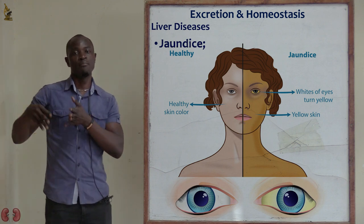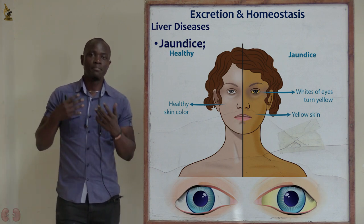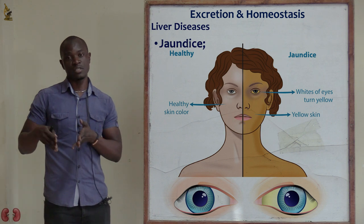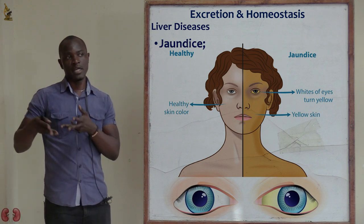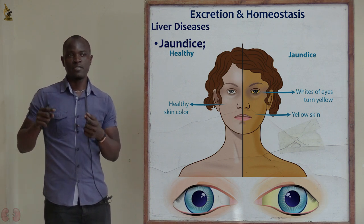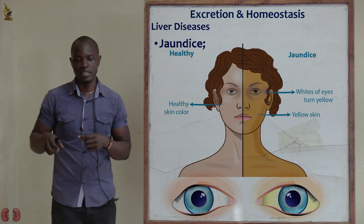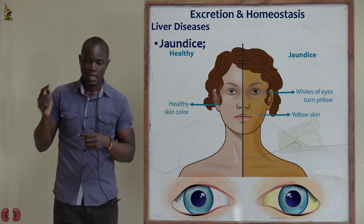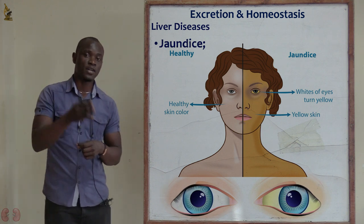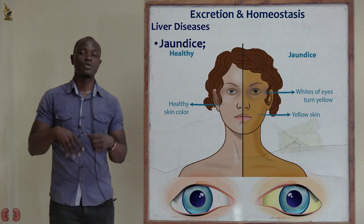The bilirubin formed from the breakdown of hemoglobin is normally eliminated as bile, which is then used in the digestion process. The function of bile juice includes emulsification — breaking down large fat droplets into smaller oil droplets — and also neutralizing the acidic chyme.